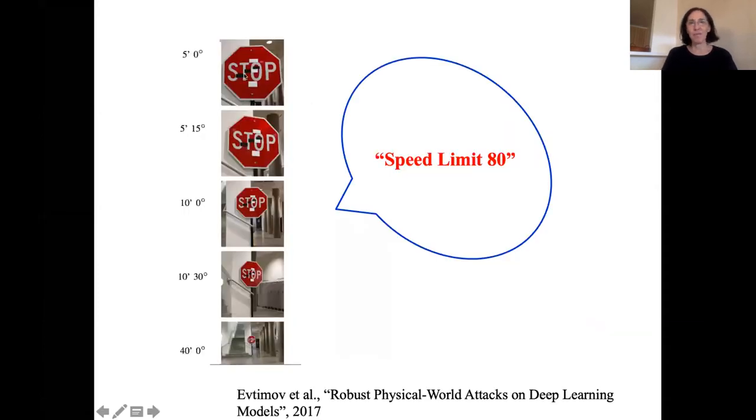We've seen this also in the well-known adversarial attacks on computer vision systems. This particular attack caused a deep neural network vision system in a self-driving car to perceive these stop signs with very carefully placed stickers on them as speed limit 80 signs. What is it that these machines are perceiving in these images? And how is it different from what humans understand?